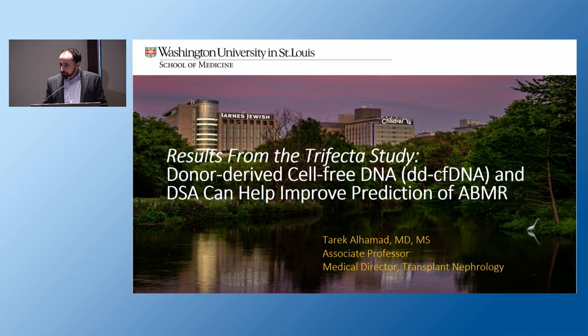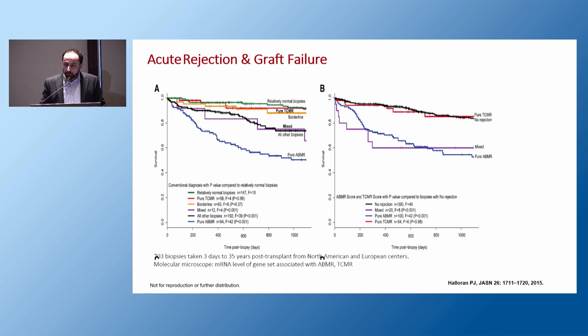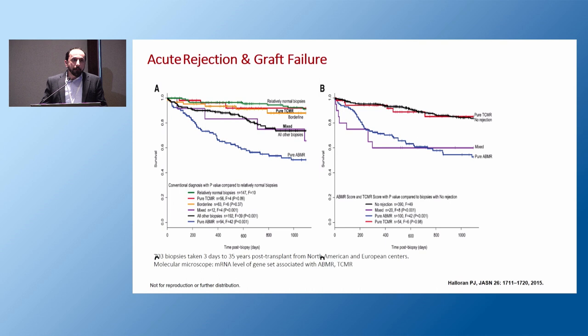We all know about the impact of rejection in kidney transplant. This paper from Halloran published in JASN shows the impact of rejection in kidney allografts — on the y-axis we have survival, with cases categorized according to rejection. AMR remains the main enemy that continues to threaten kidney transplant. Whether based on standard histology or molecular microscope, both AMR and mixed rejection have inferior survival compared to standard graft survival or cases without rejection. What can we do to have better prediction and earlier diagnosis so we can start early treatment?